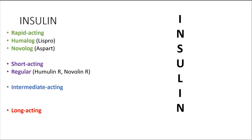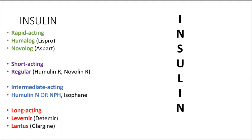Those are your short acting. There's also the intermediate acting where you have your Humulin N, or NPH — also known as isophane. Those are your intermediate acting insulin. With long acting, we have Levemir and Lantus. Levemir is also known as detemir and Lantus is also known as glargine.